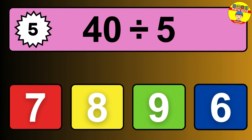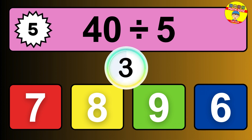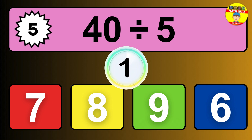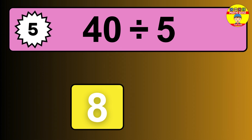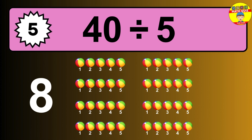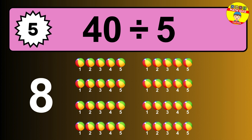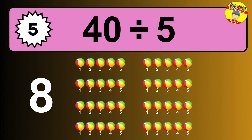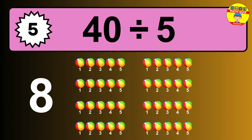40 divided by 5 is... time to think. Let's go to the solution. Divide the number 40 by 5. Each group contains 5 units. So dividing 40 by 5 results in 8 equal groups. Thus, the result is... 40 divided by 5 equals 8.